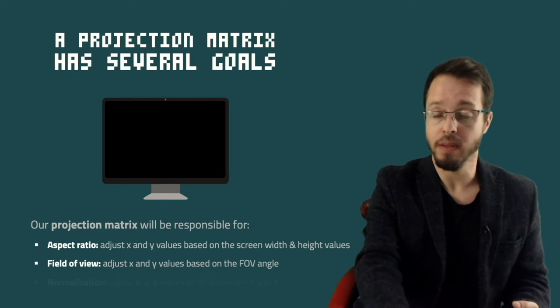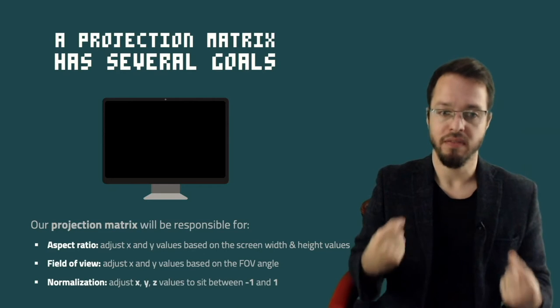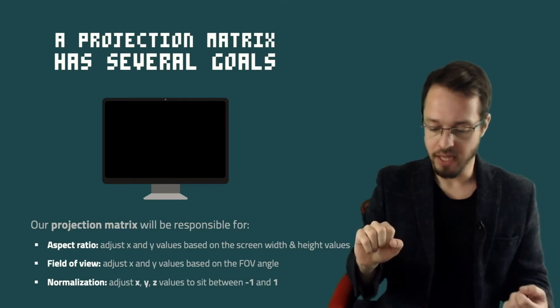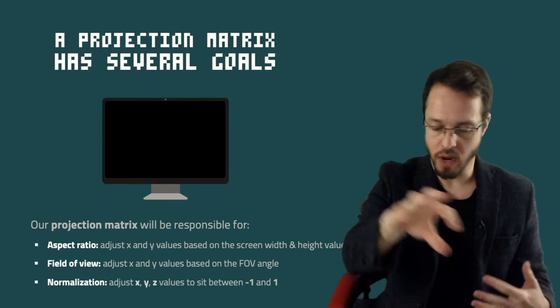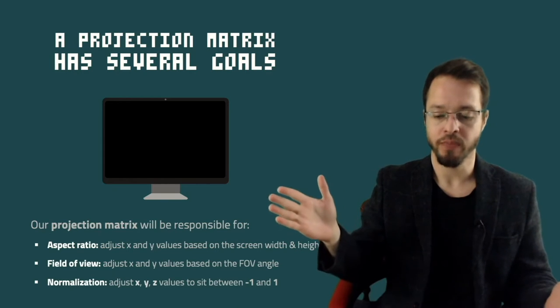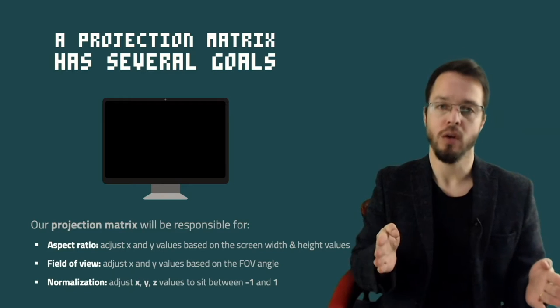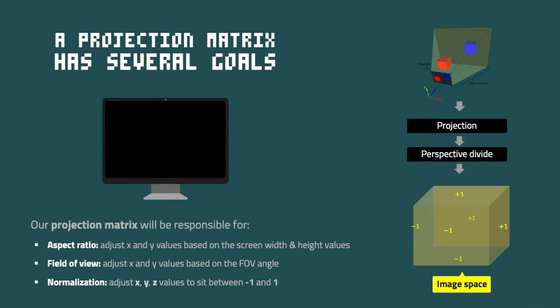The third thing, and probably the most important, is what we call normalization of our values. We're going to map all those values — objects in world space with different x, y, and z coordinates — and normalize everything to sit in a range between minus one and one. After we perform the perspective divide, we end up with what we call image space: an almost cube-like structure with all x, y, and z values between minus one and plus one. This is what we call normalized device coordinates, or NDC.